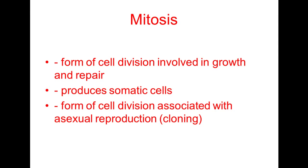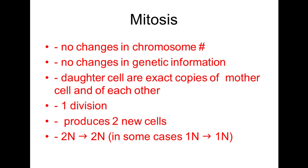Mitosis has no changes in chromosome number. In a human cell, you start with 46 chromosomes, go through mitosis, and produce two new cells each with 46 chromosomes. There is also no change in genetic information — the daughter cells are exact copies of the mother cell and of each other. Mitosis involves one division, produces two new cells, and starts with a diploid cell (2N) to end with diploid cells (2N).